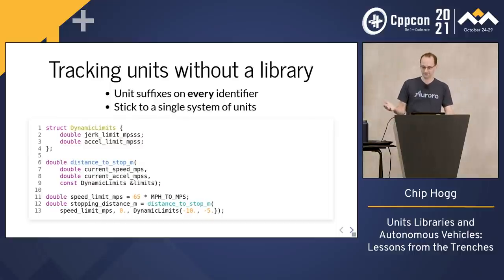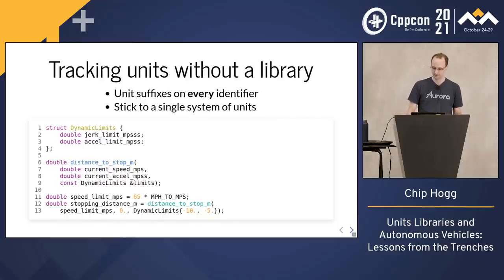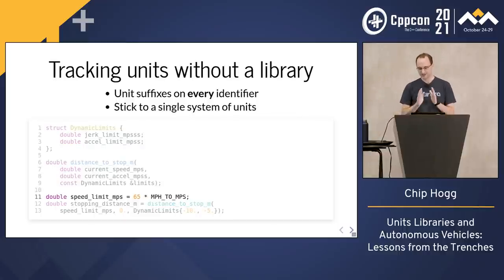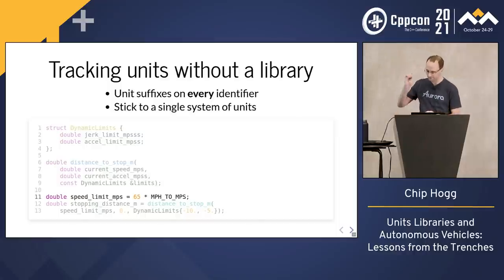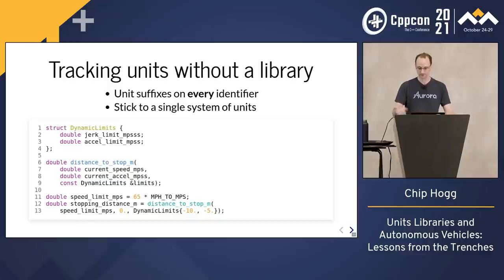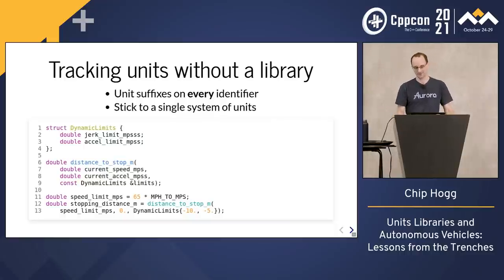Why are they rare? Because developers do significant manual work to maintain unit correctness. Here are some rules that people typically follow. Every identifier which holds a quantity must end in a suffix which indicates the units. Stick to a single system of units, typically SI, everywhere. If your quantity is in some other units, you convert it right away. Assuming you have a strong culture of code review, unit tests, integration tests, and end-to-end tests, this is effective at preventing almost all unit errors. It's just a lot of manual work.